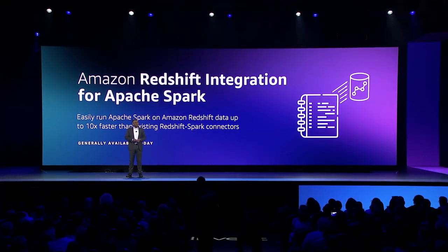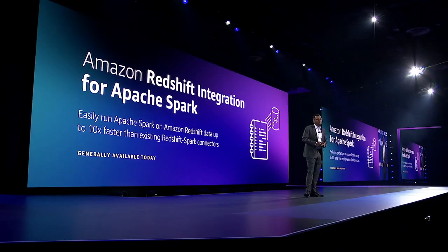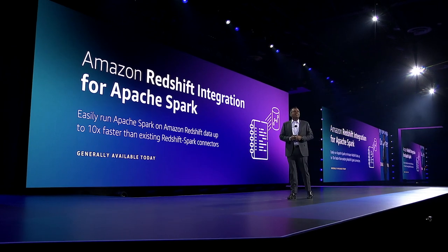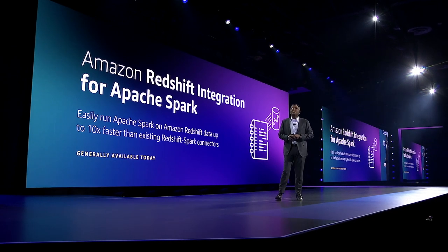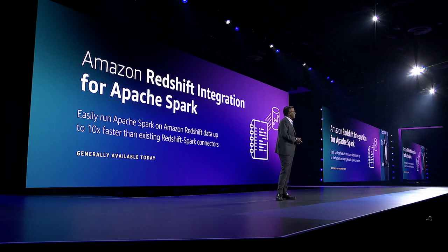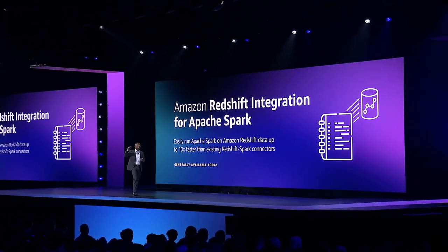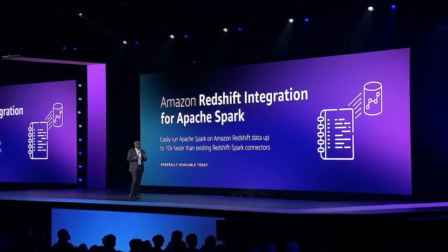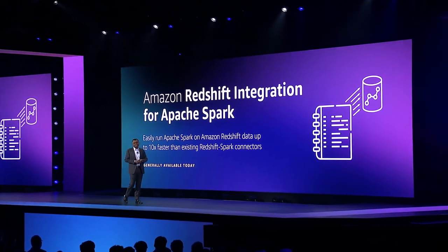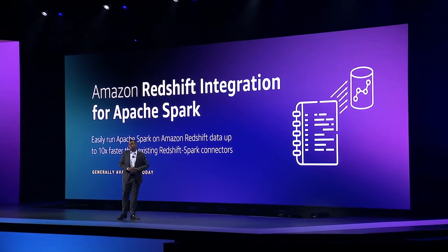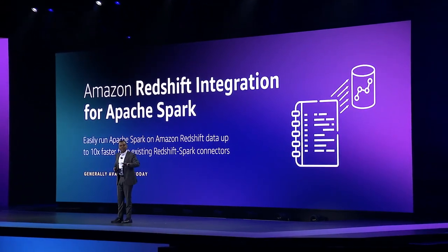Just yesterday, we announced Amazon Redshift integration for Apache Spark, which makes it easier for running Spark applications on Redshift data from other AWS analytics services. This integration enables EMR applications to access Redshift data to run up to 10x faster compared to existing Redshift Spark connectors. And with a fully certified Redshift connector, you can quickly run analytics and ML without compromising on security.